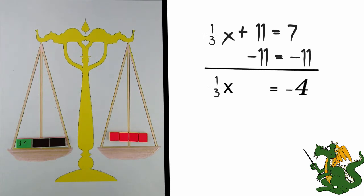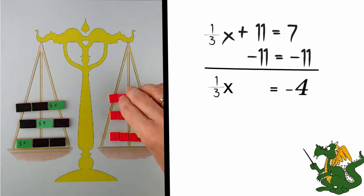Well, I know that 1 third x is equal to negative 4. So 2 thirds x is equal to negative 8. And if I add another third of an x, I would get another negative 4.